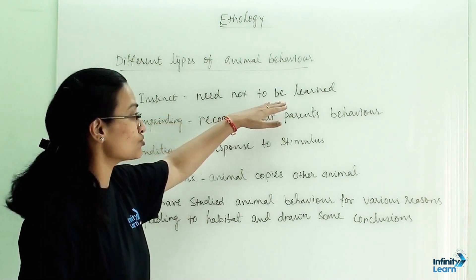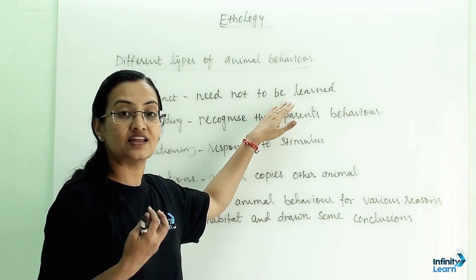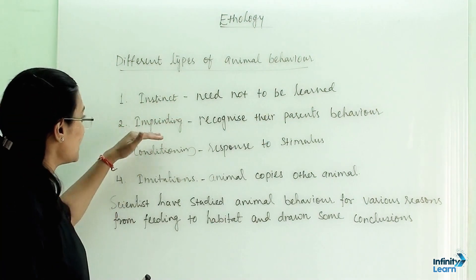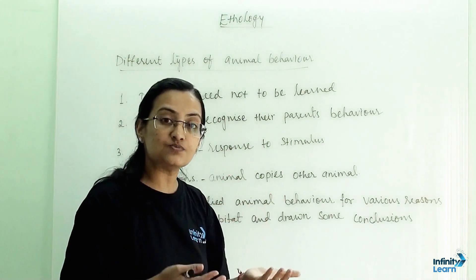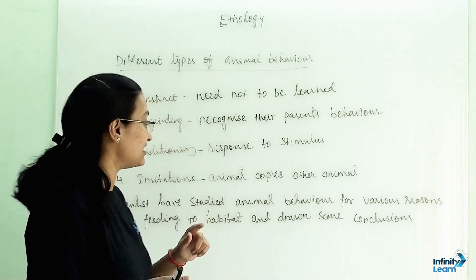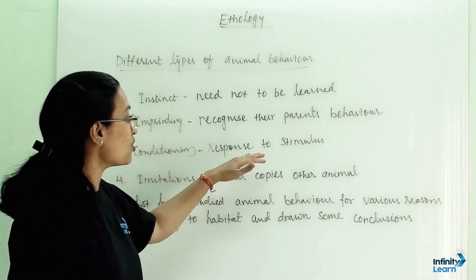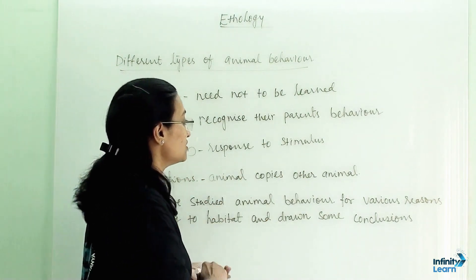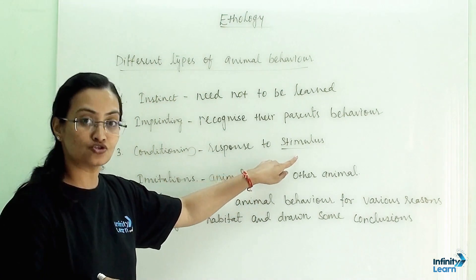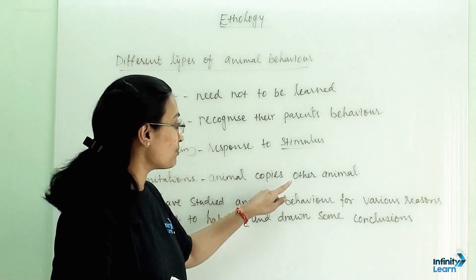Instinct means need not to be learned — the animal already knows it. Second, imprinting: they recognize their parents' behavior and start following them. Third, conditioning: it is a response to stimulus — we will learn what a stimulus response is. Fourth, imitation means an animal copies another animal.